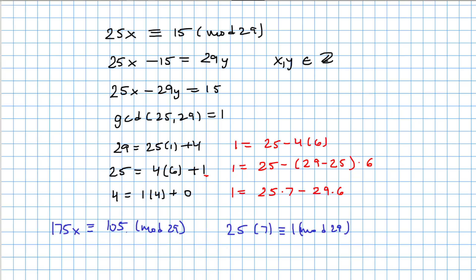175 divided by 29 gives remainder 1, so the left side reduces to x. And 105 divided by 29 gives remainder 18. So the x value here is 18, and that is our final answer.